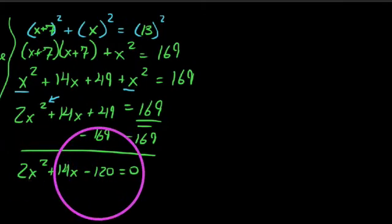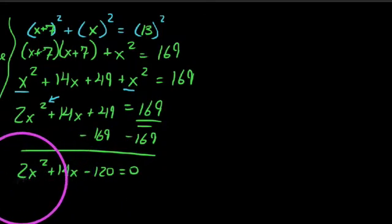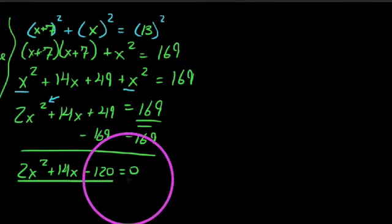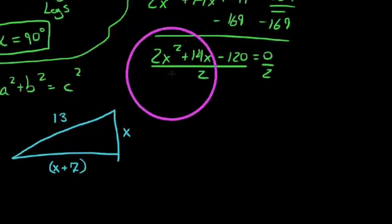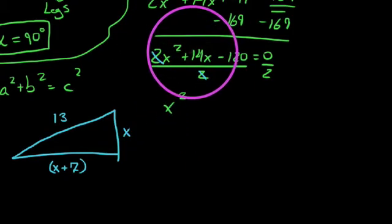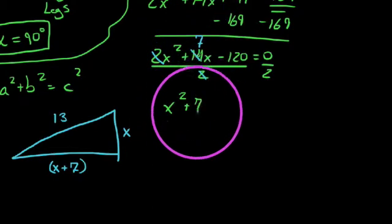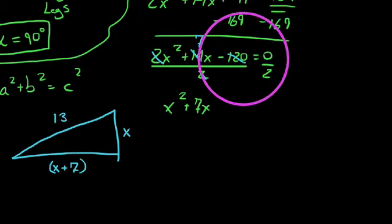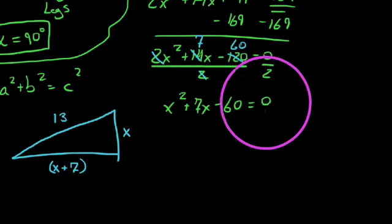And when it comes to factoring, we tend to want to set this side equal to 0. So let's go ahead and subtract 169 from both sides. And what we find out is we end up with 2X squared plus 14X minus 120 equals 0. And you might notice that when we factor, the first thing you always check for is the greatest common factor. And I happen to notice that everything shares a common factor of 2. And since the right side is 0, I'm going to go ahead and divide this factor of 2 out. So this will become X squared plus 7X minus 60 equals 0.